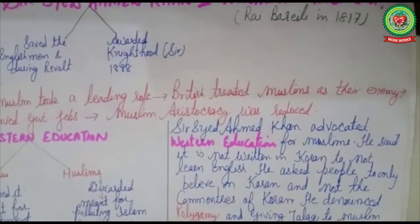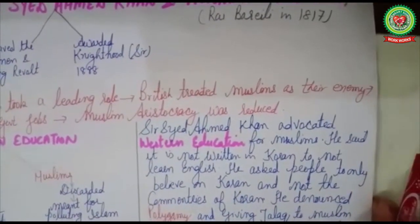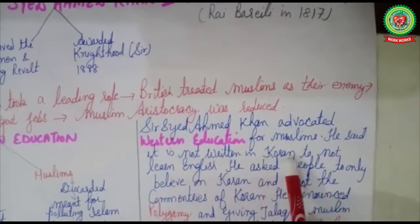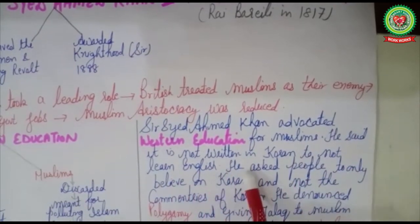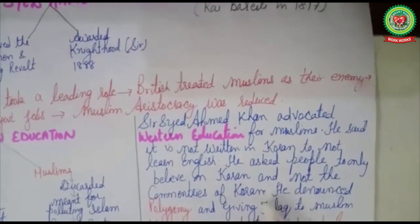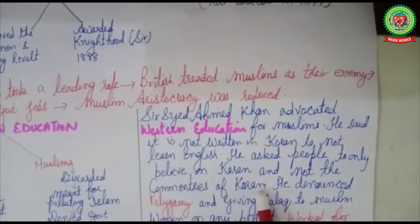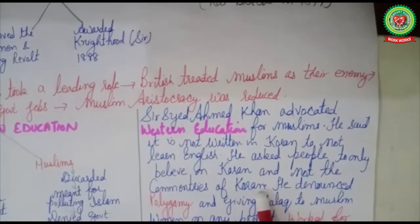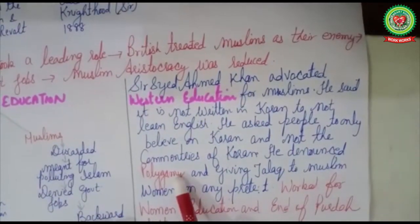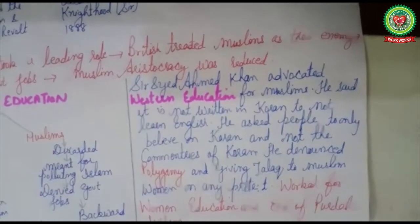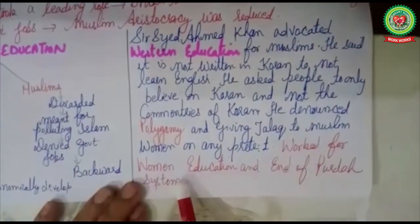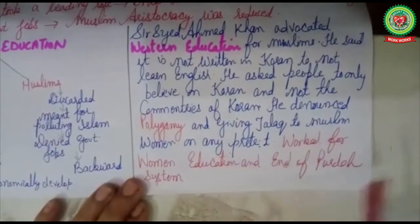Seeing the miserable position of Muslims in society, Sir Syed Ahmad Khan advocated western education for Muslims. He said it is not written in the Quran to not learn English, and asked people to believe only in the Quran and not other commentaries. He argued that the Quran is not against learning western education, so Muslims should equip themselves with it. He also denounced polygamy and was against giving talaq to Muslim women on any pretext, and he worked for women's education in Muslim society.